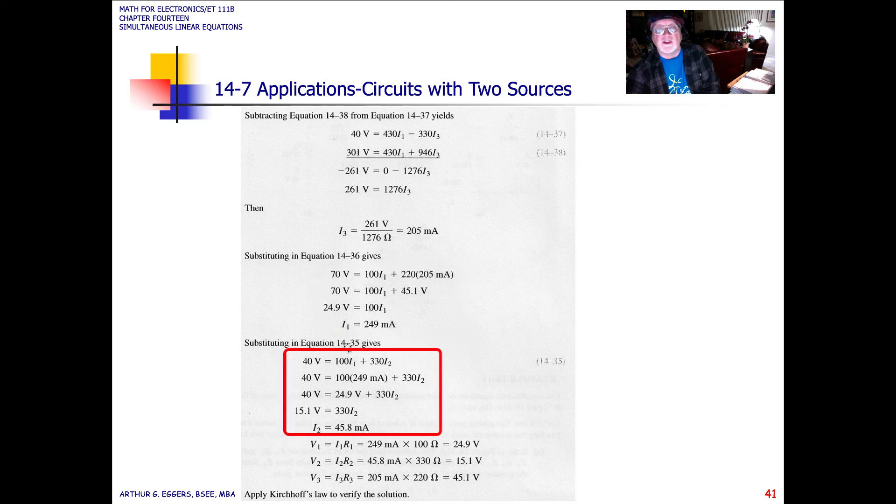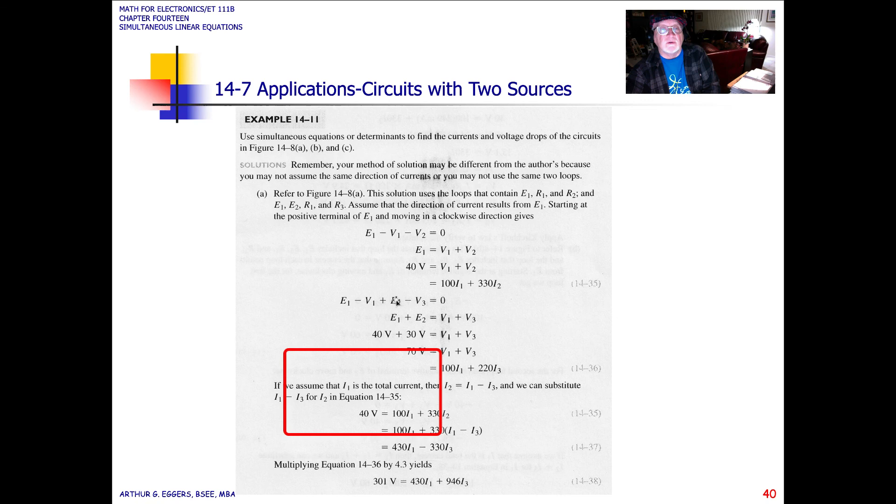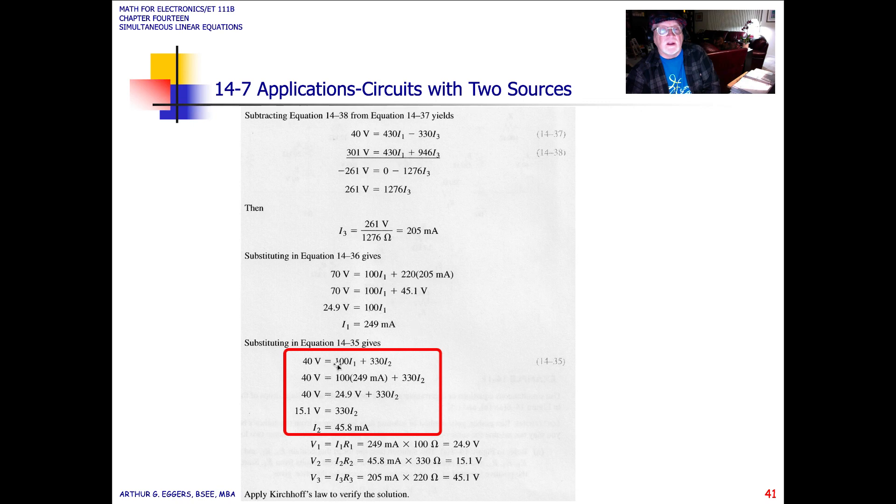Substituting then equation 35, which is, you'll recall from back here, this was 35 up here that we went through and solved for that loop. Solving for 14-35, 40 volts equals 100 I1 plus 330 I2, putting that value in then of 249 milliamps in for I1, we're able to solve for I2. So 40 volts is equal to 24.9 volts plus 330 I2. So this, as we go through here, 15.1 volts equals 330 I2, or I2 equals 45.8 milliamps.